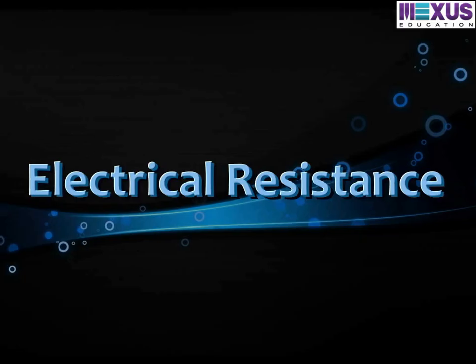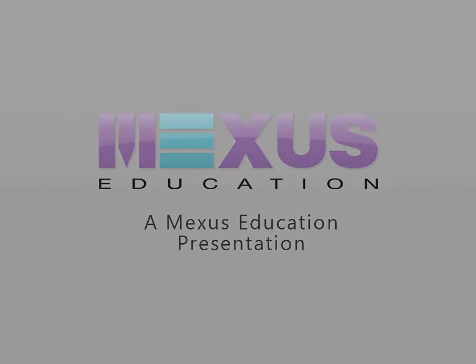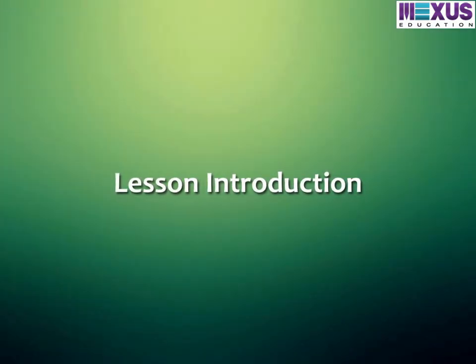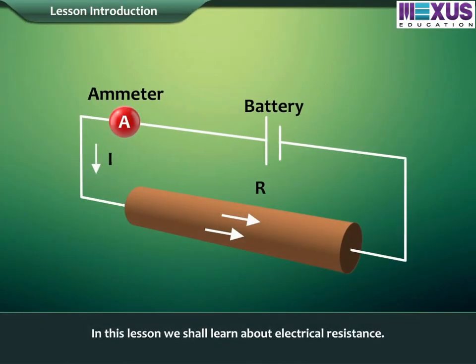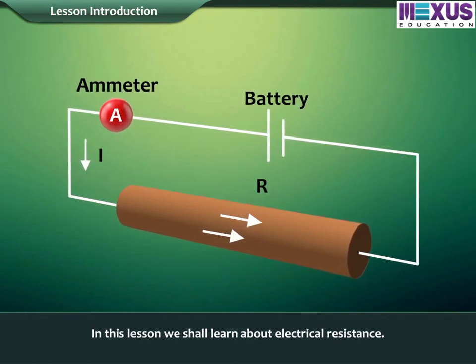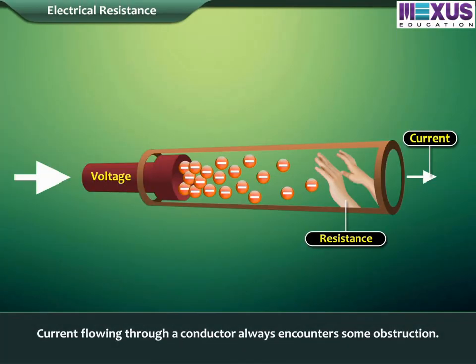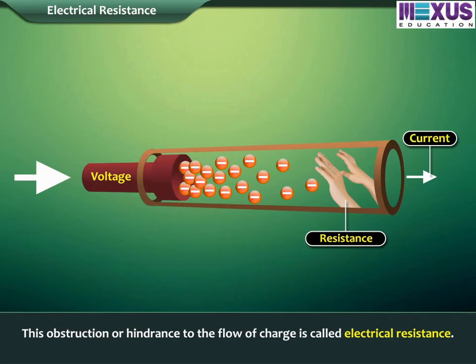Electrical resistance. In this lesson, we shall learn about electrical resistance. Current flowing through a conductor always encounters some obstruction. This obstruction or hindrance to the flow of charge is called electrical resistance.